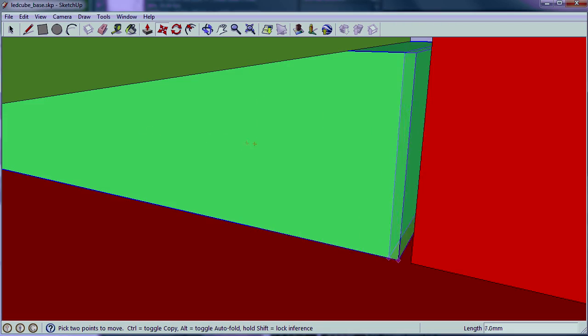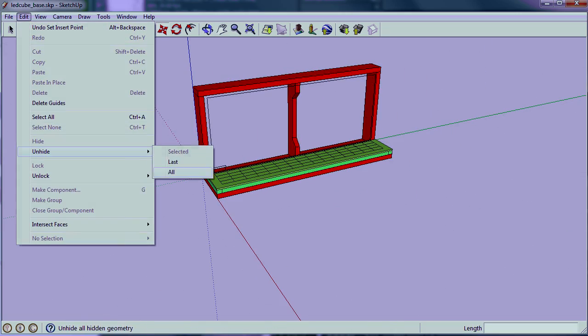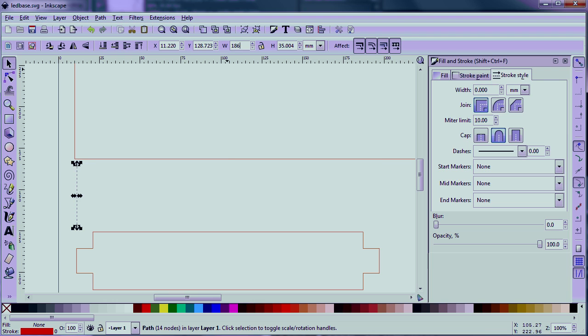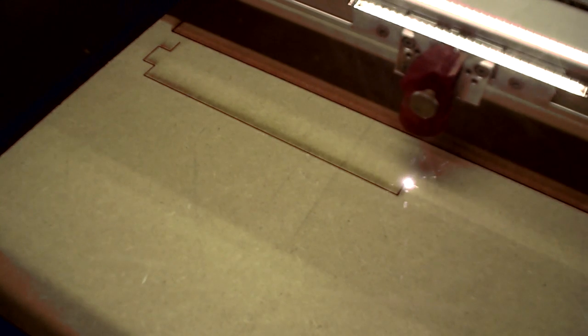Before building the box, I made a 3D model of it in Google Sketchup, just to get an idea of the dimensions of the box. This model is then transformed into 2D and cut using a laser cutter.